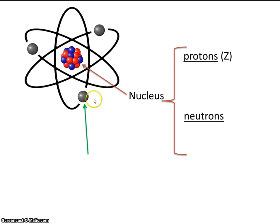The third subatomic particle is not found in the nucleus, but rather is found outside the nucleus, and that, of course, is the electron.